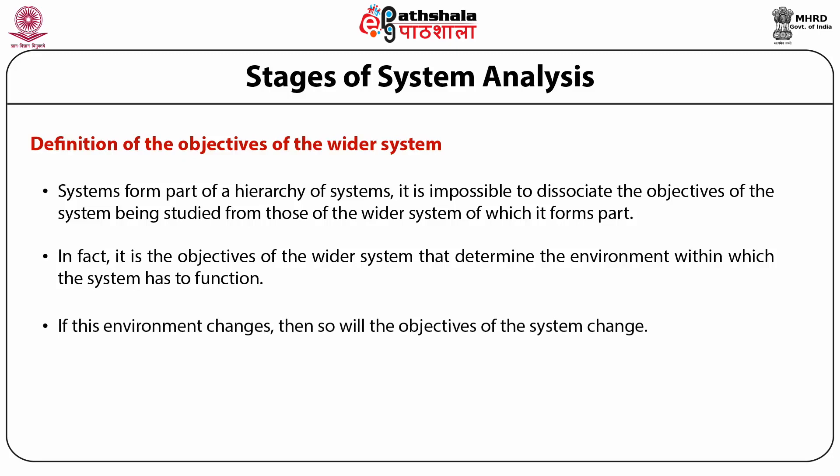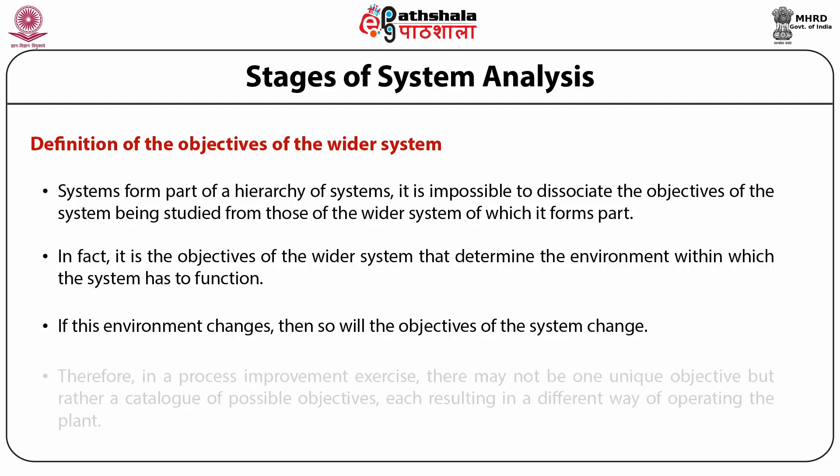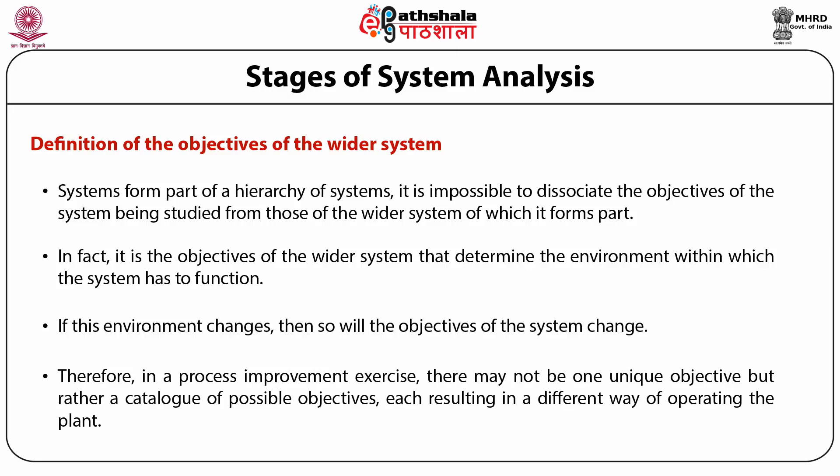If this environment changes, so will the objectives of the system. To take a simple example, the objectives of a single chemical plant must fit into the overall production plan of the company. At different times the company plan may stipulate one of several objectives. Therefore, in a process improvement exercise there may not be one unique objective, but rather a catalogue of possible objectives that result in a different way of operating the plant.